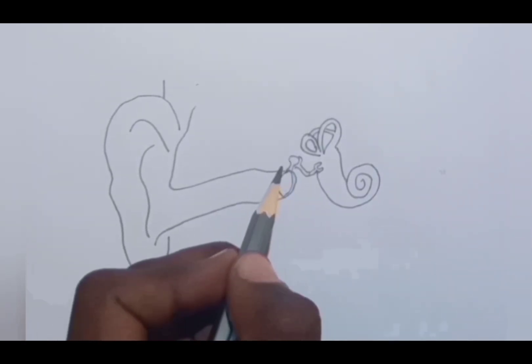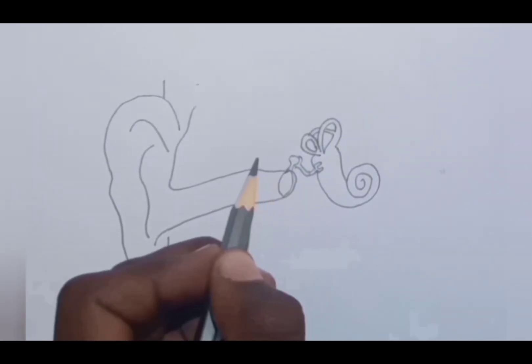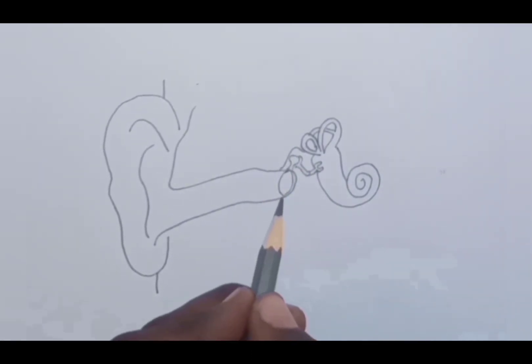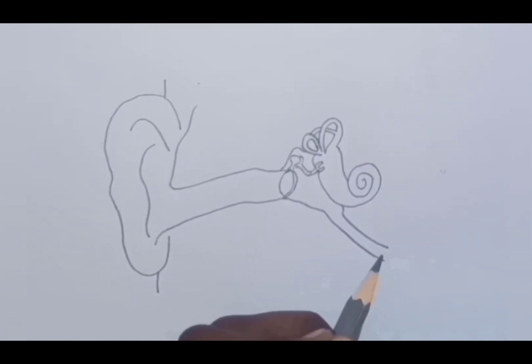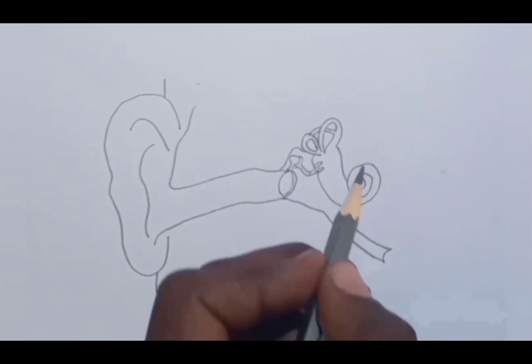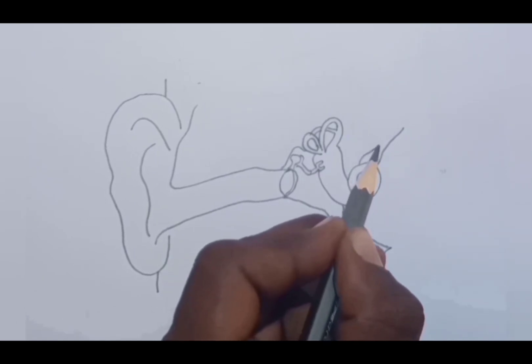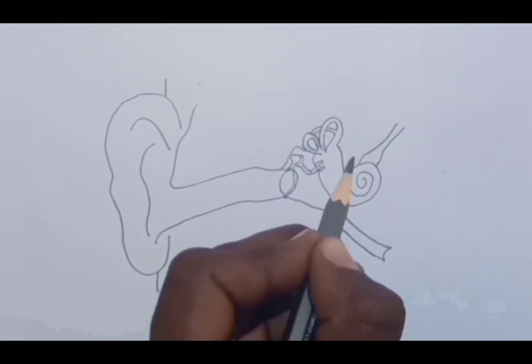Now drawing one line from the ear drum up to here. Drawing a second line from the cochlea and joined like this. This tube-like structure is called the Eustachian tube. And lastly, drawing the auditory nerve like this.